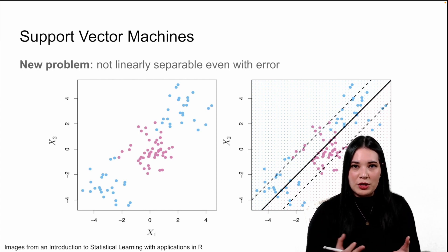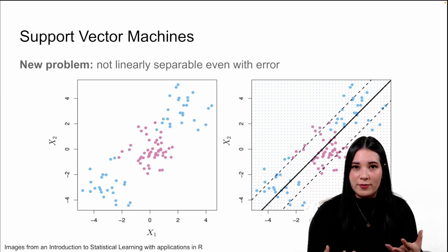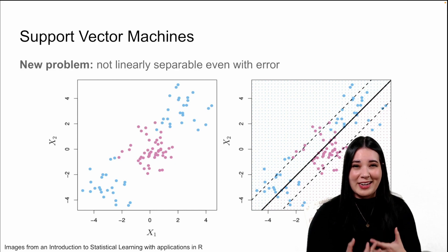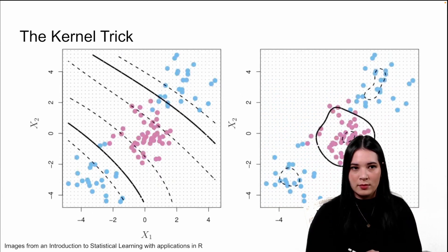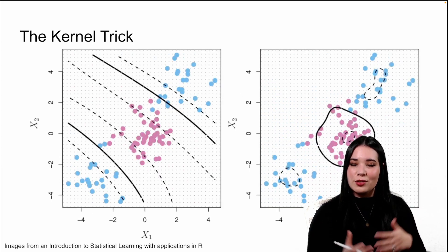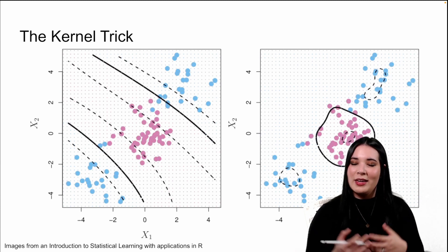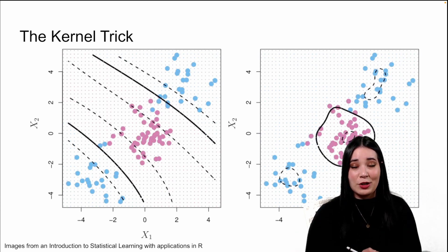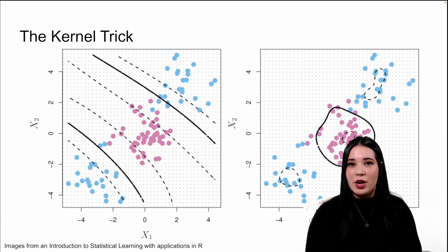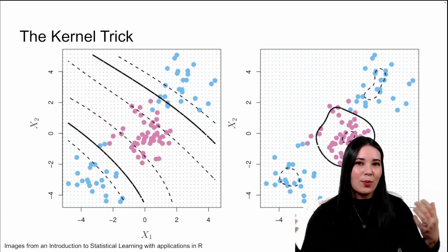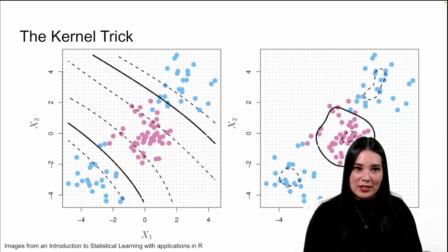So, what do we do when we want to use a support vector classifier but our data is not even linearly separable? Introducing the kernel trick. When we take the kernel trick and apply it with support vector classifiers, we get support vector machines.